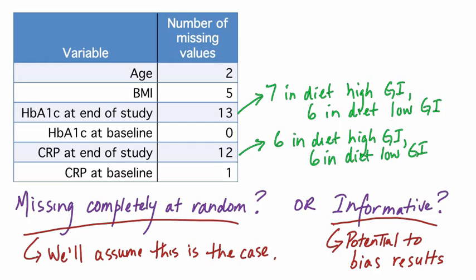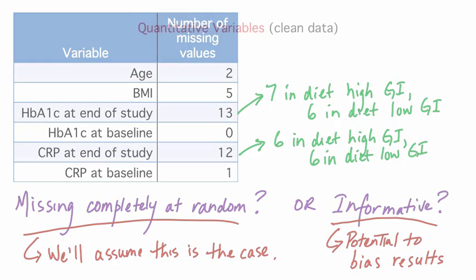So now we've cleaned our data by fixing some problems with the coding of sex, and by replacing the 999s with the appropriate missing value indicator. Now that we've got rid of those 999s, let's go back and take another look at the quantitative variables.